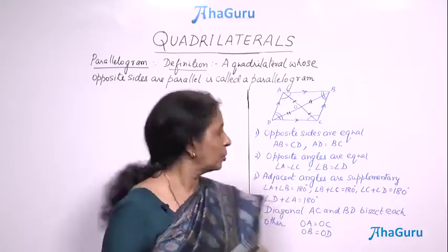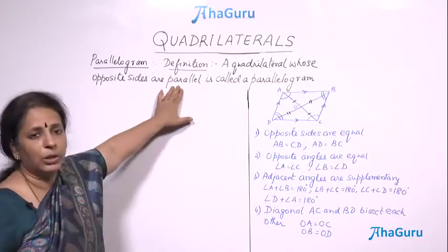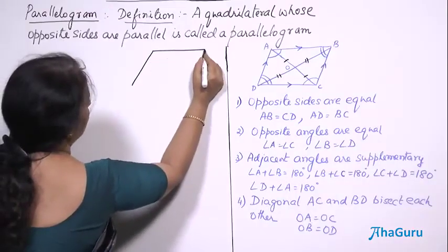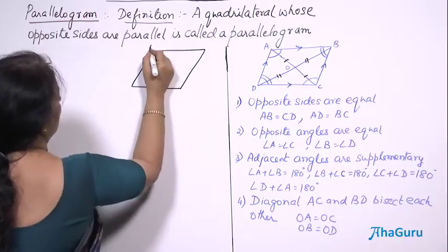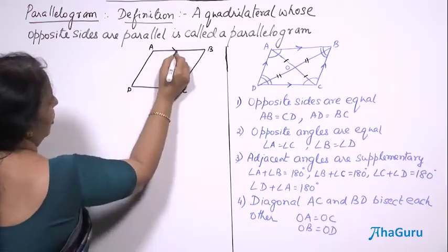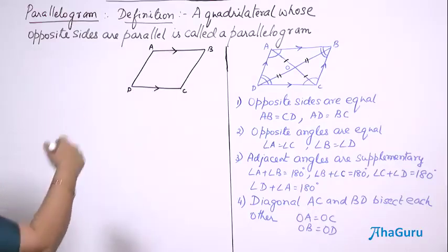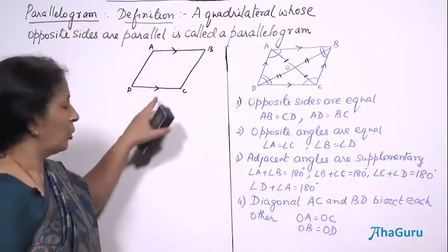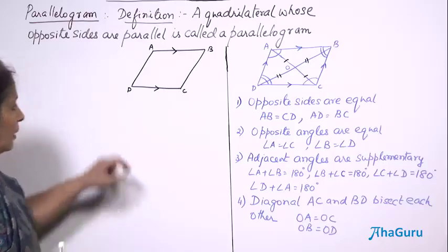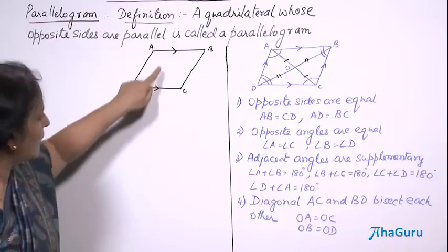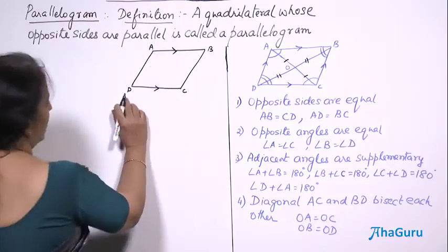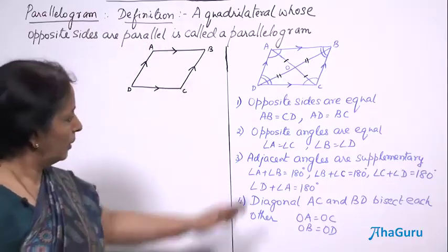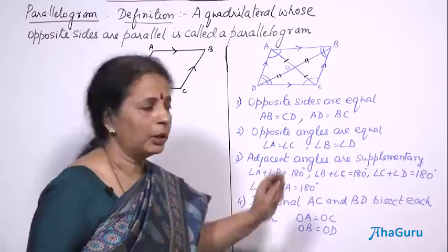Let us draw a small parallelogram — the only thing we know is the sides being parallel, that is all. So ABCD — how do you show parallel sides? These two arrows indicate that this side is parallel to this side. Whenever you see arrows like this, you should take it for granted the sides are parallel. These arrows are enough to tell you this line is parallel to the other. Similarly, AD is parallel to BC — that is the definition.